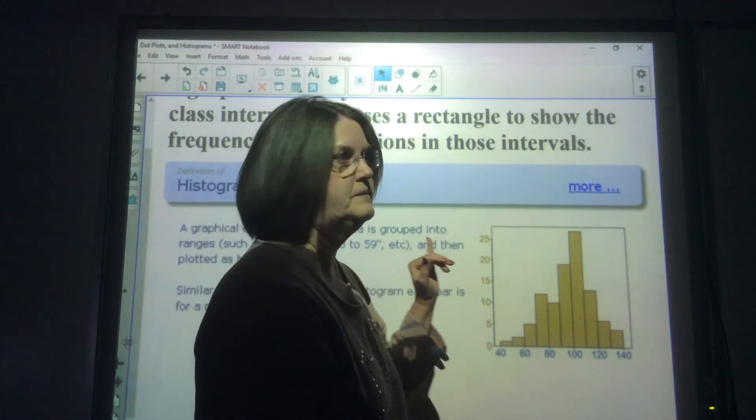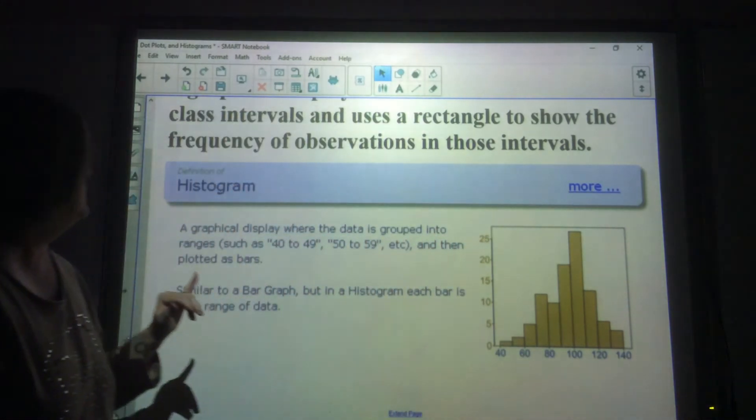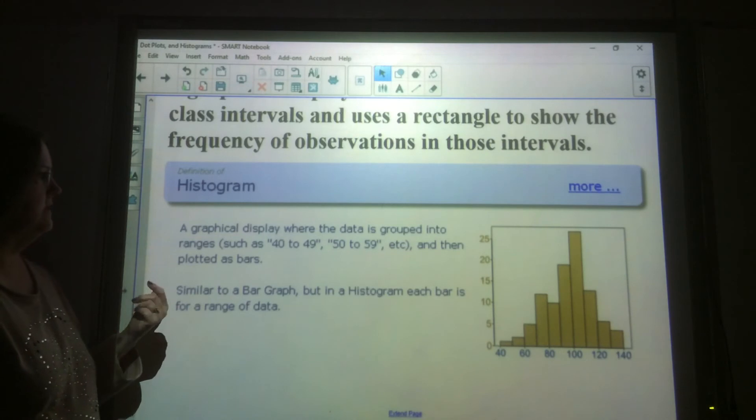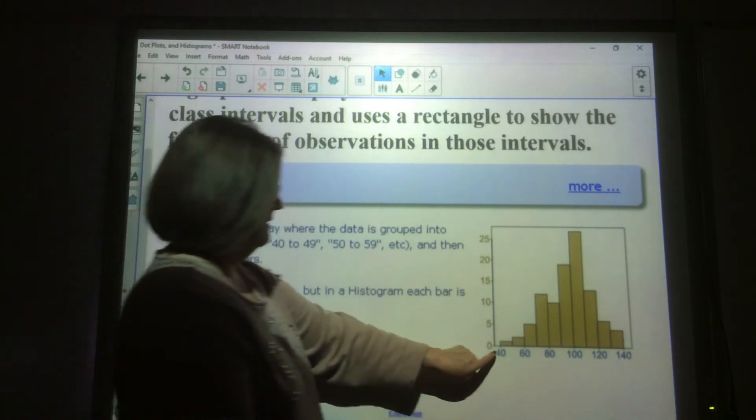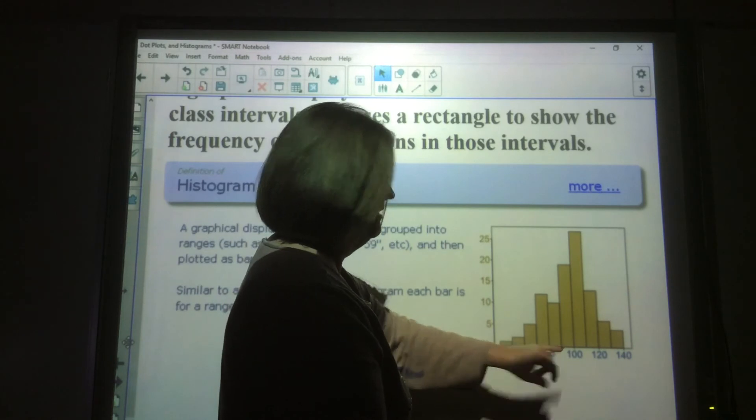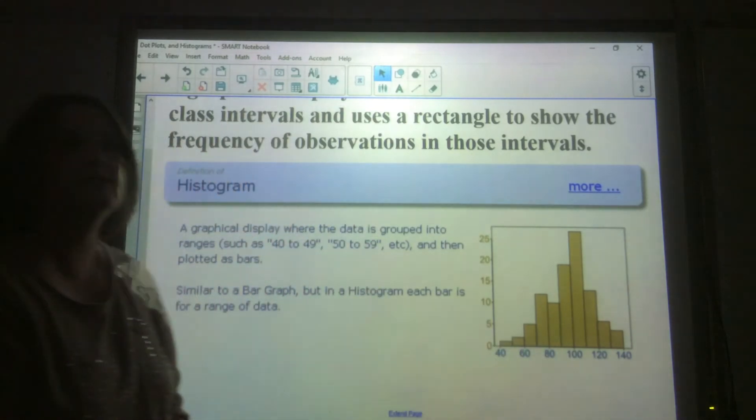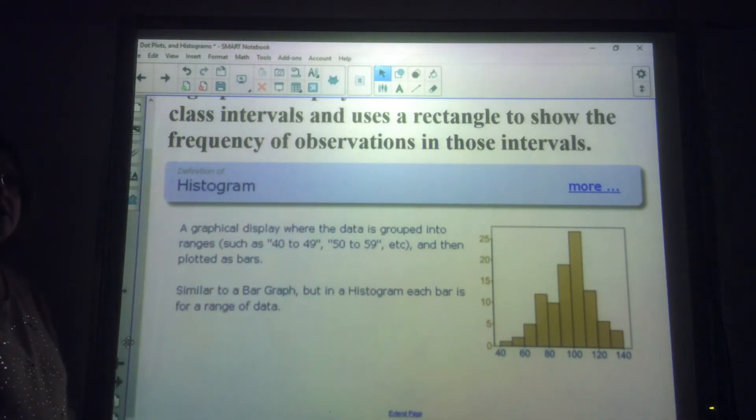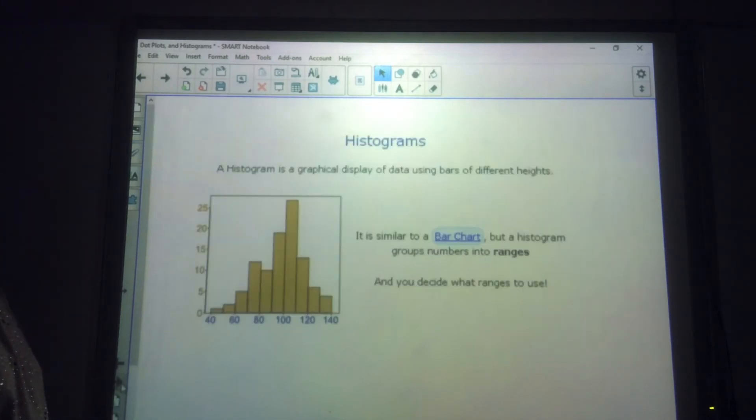With a bar graph, there will be a space between the bars. So that's basically the thing that you want to do. This is a graphical display where the data is grouped into ranges such as 40 to 49. That's what you've got here, 40 to 49, 50 to 59, 60 to 69, 70 to 79. And notice that they are the same, just like on a frequency table. So this is similar to a bar graph, but in a histogram, each bar is for a range of data.